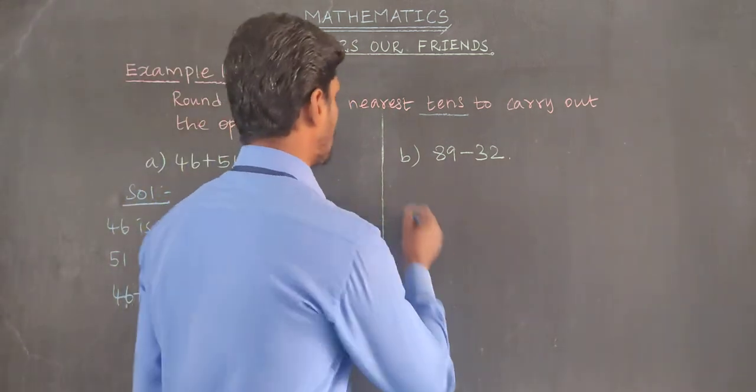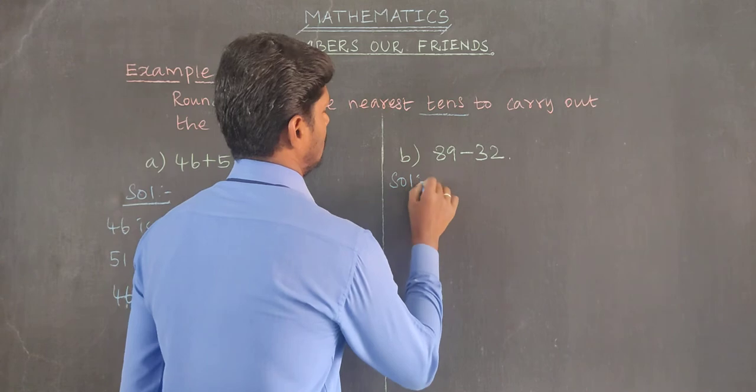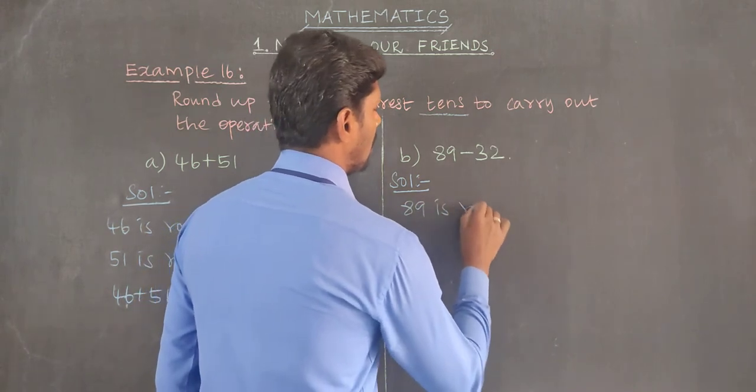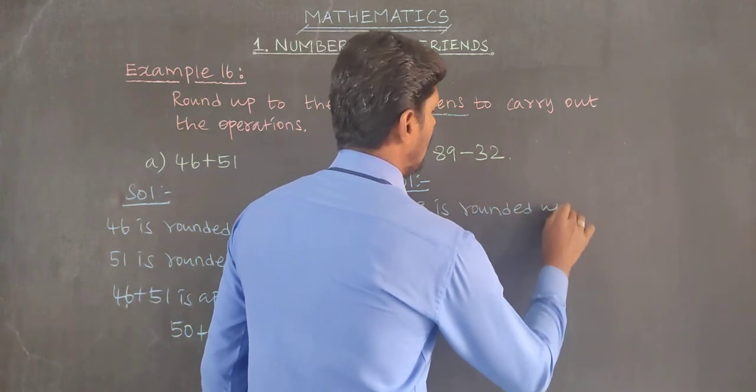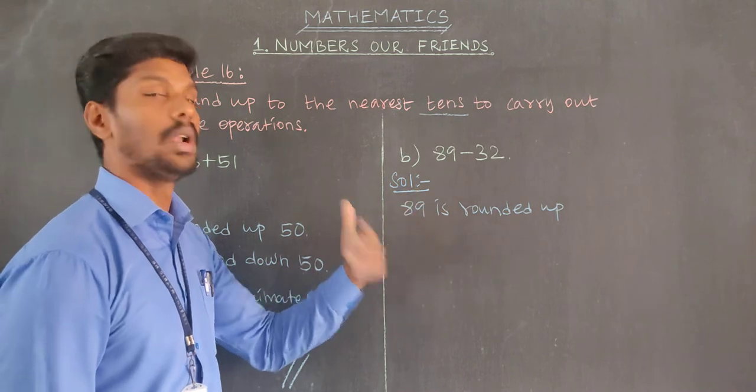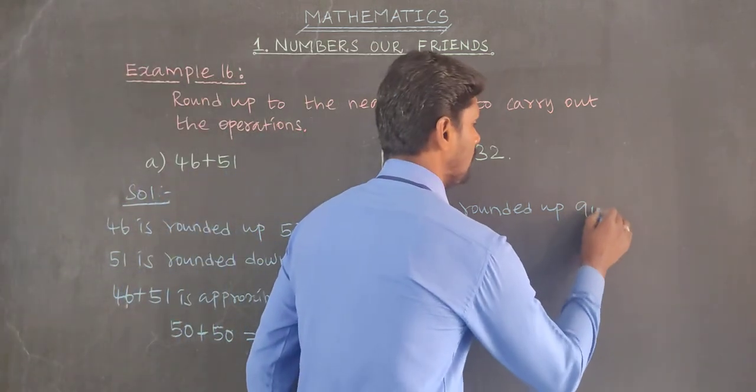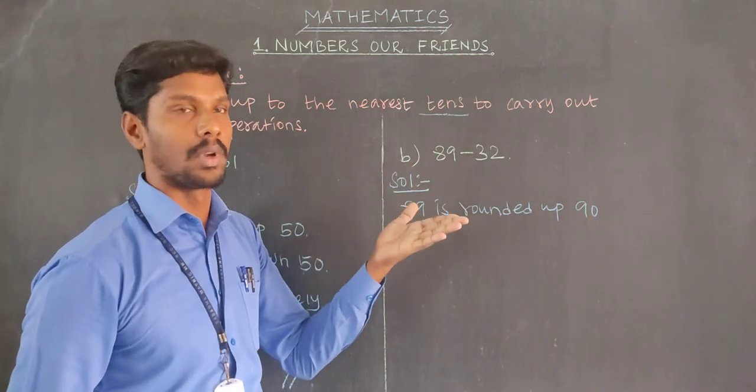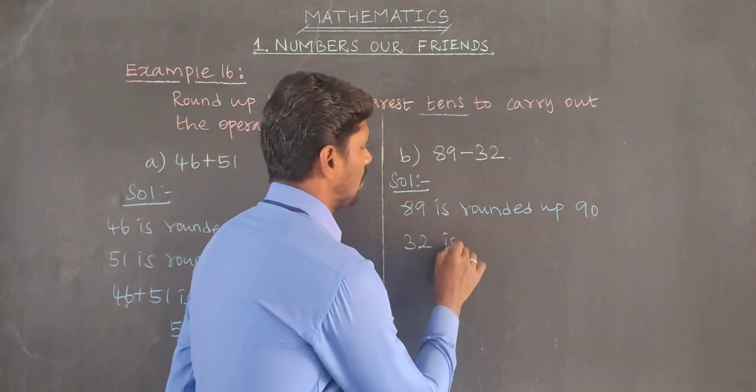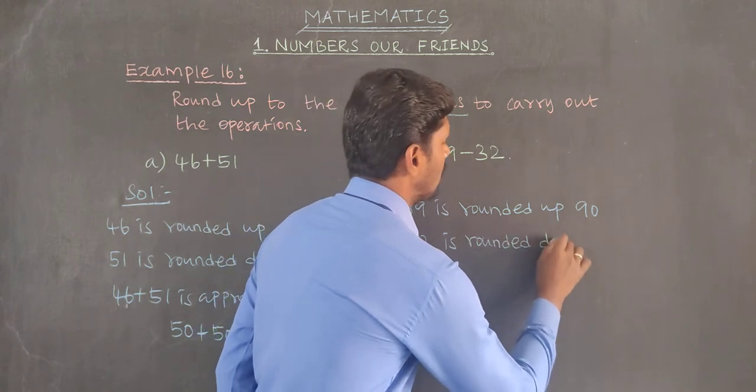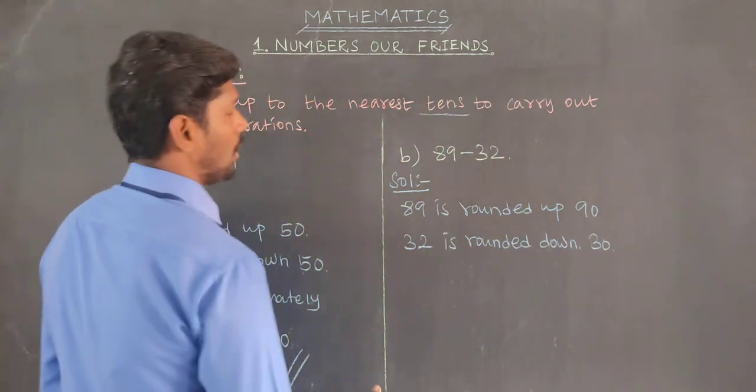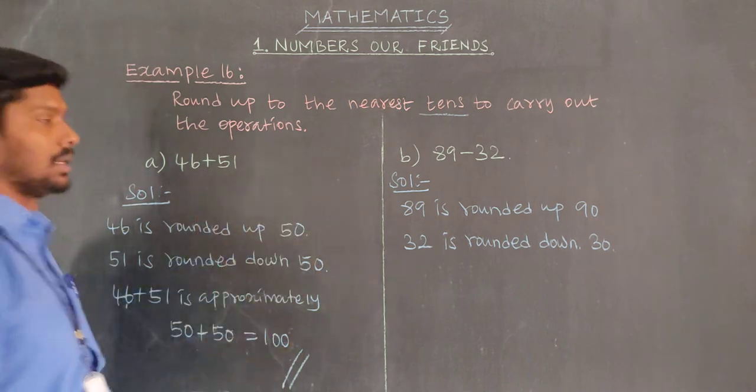Part B: 89 minus 32. Solution: 89 is rounded up to 90.